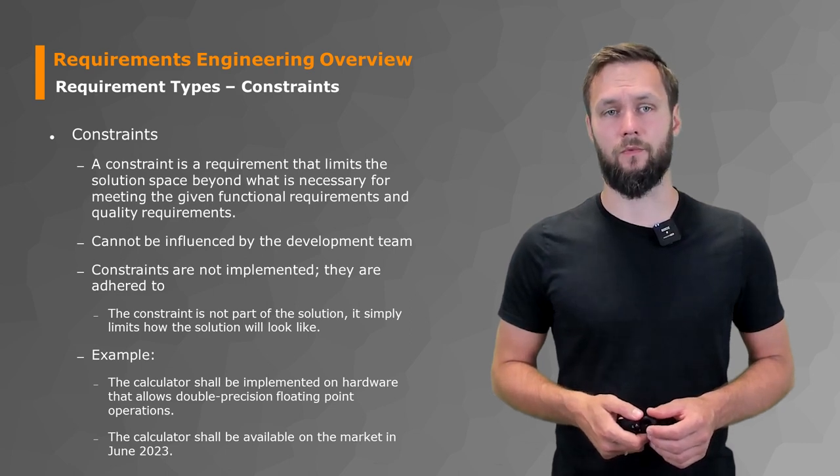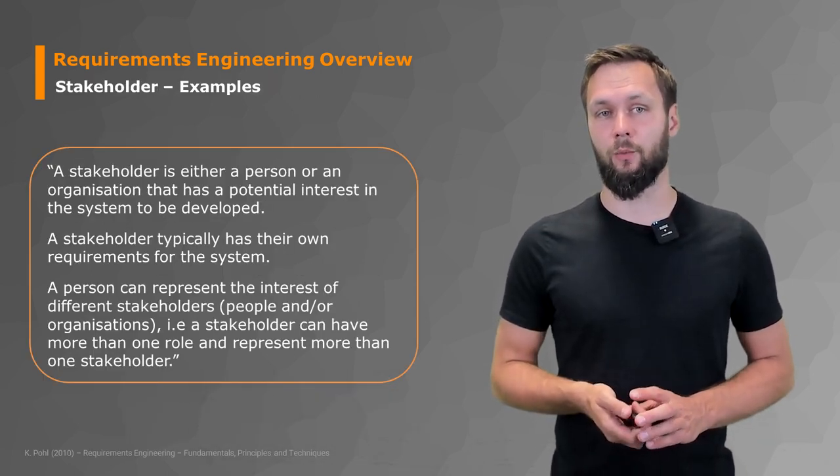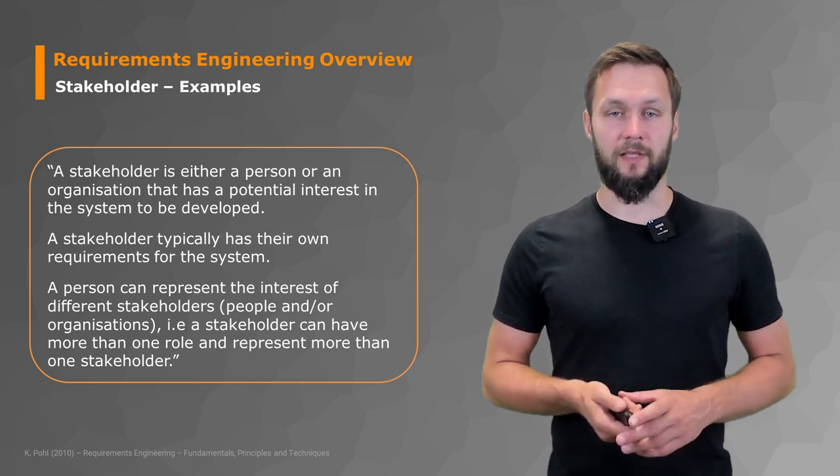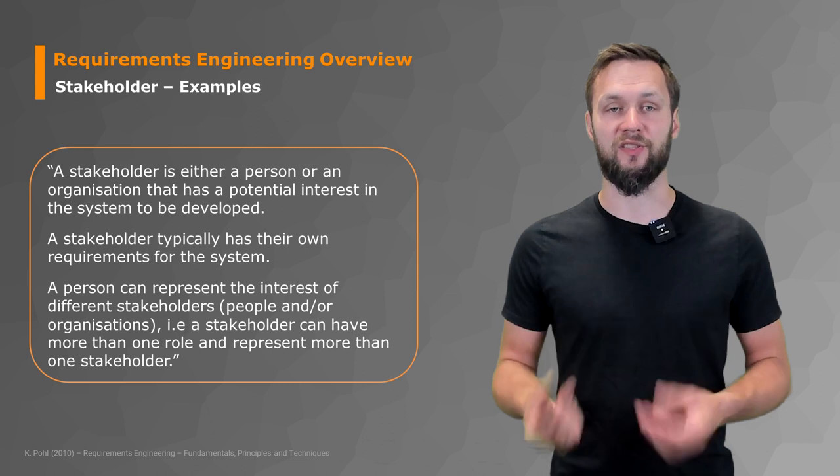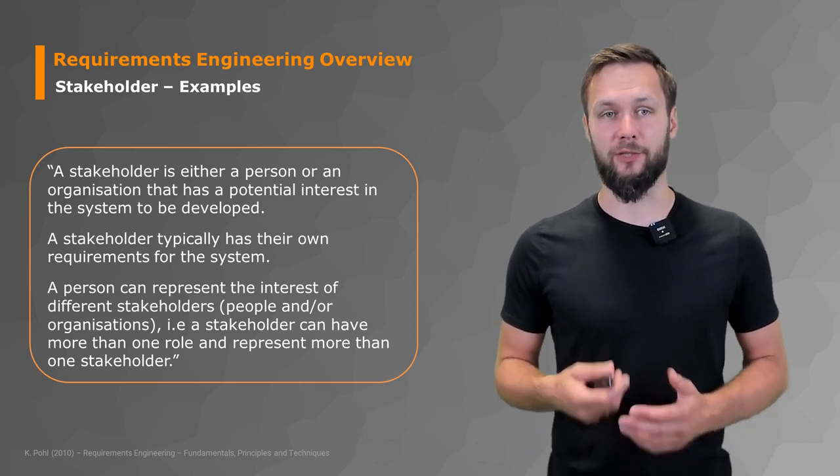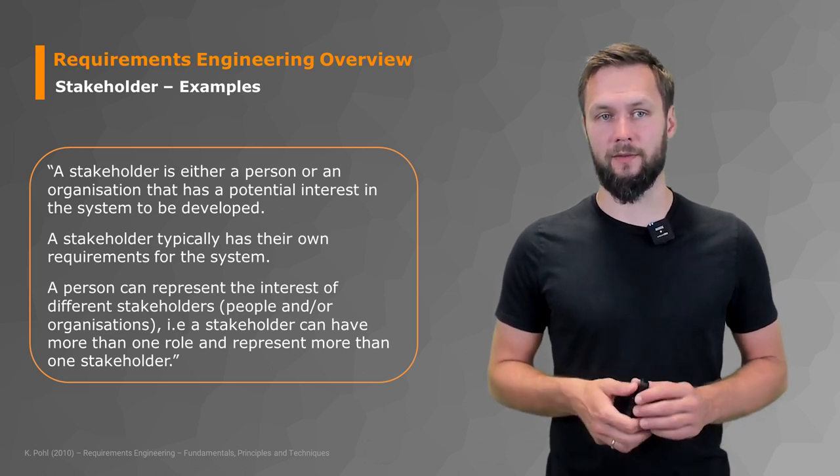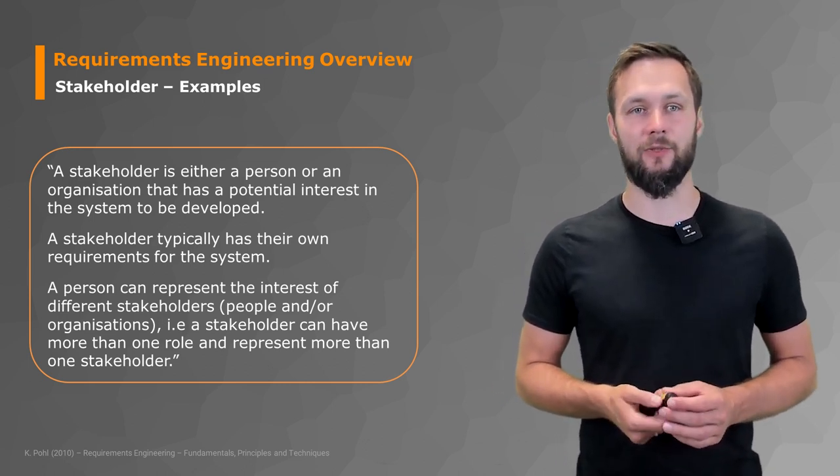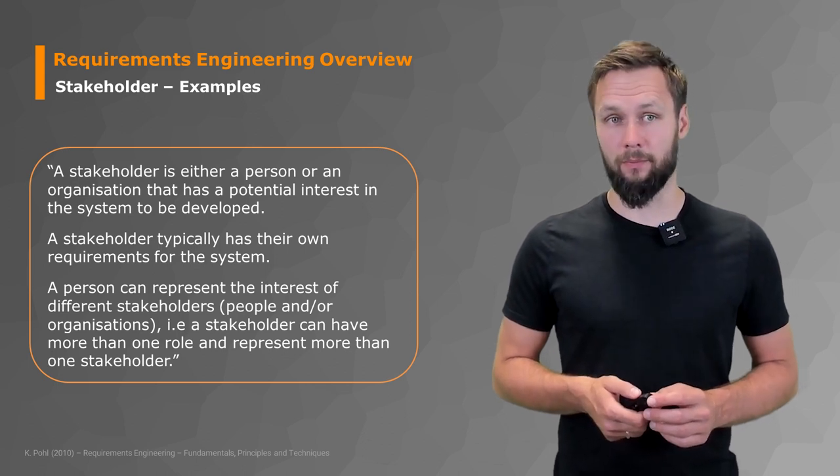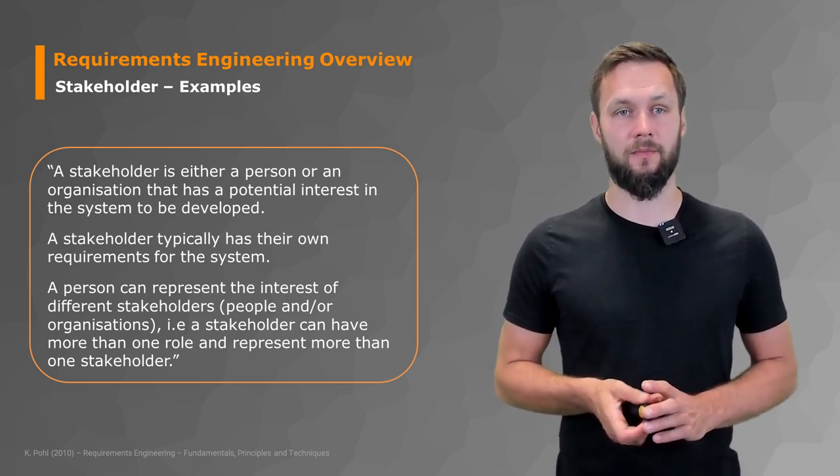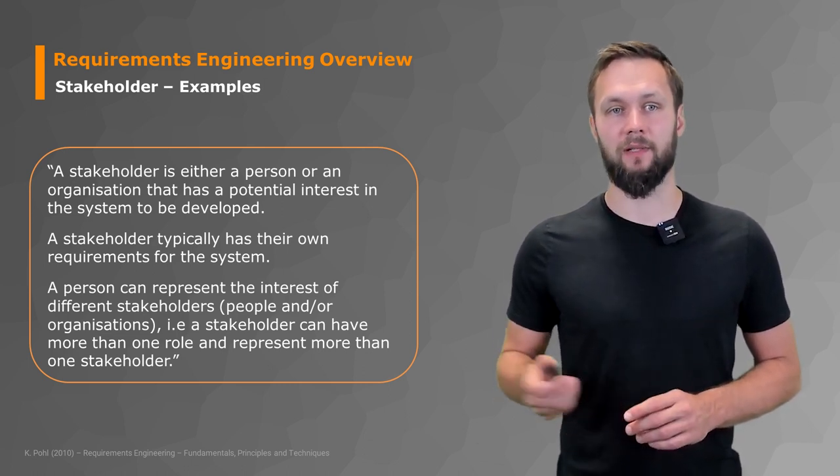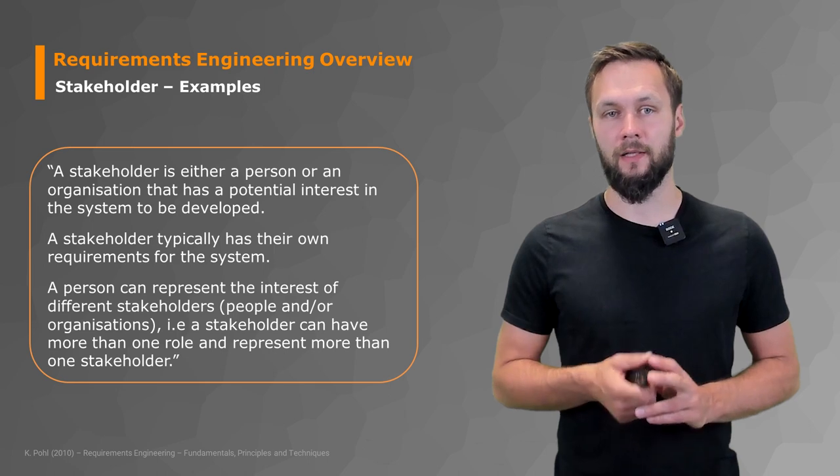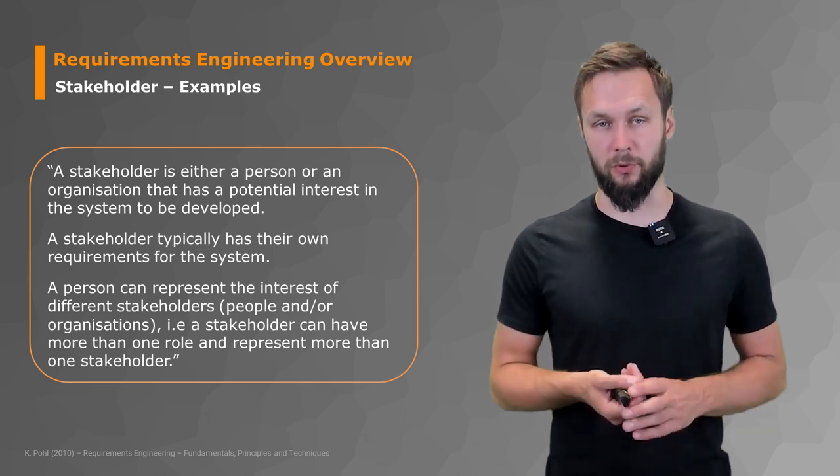Next, a very important definition we slightly touched in the previous video: what a stakeholder is. Once again, there are many definitions. It's not about learning them by heart; it's about understanding them and being able to replicate the major properties. According to the definition in our reference book, a stakeholder is either a person or an organization that has a potential interest in the system to be developed. A stakeholder typically has their own requirements for a system. A person can represent the interest of different stakeholders, people, and/or organizations. For example, a stakeholder can have more than one role and represent more than one stakeholder. I can be the marketing person selling the product you're supposed to build, but I can also at the same time be a user of the same thing I'm selling, so I can have different roles.